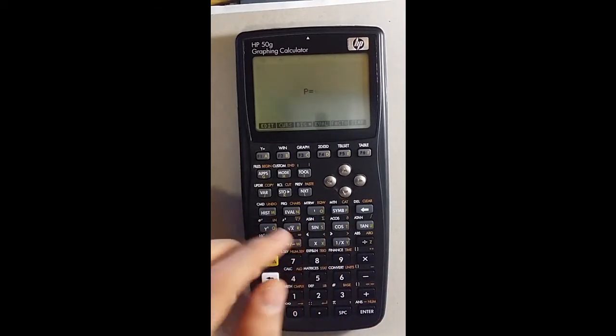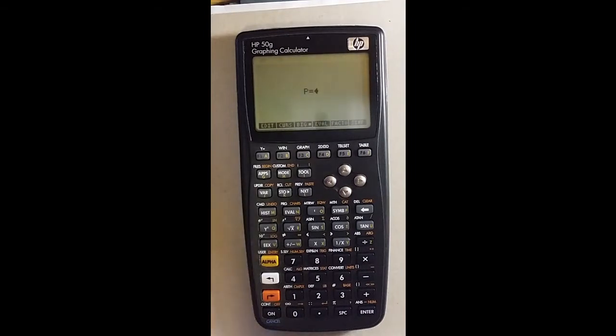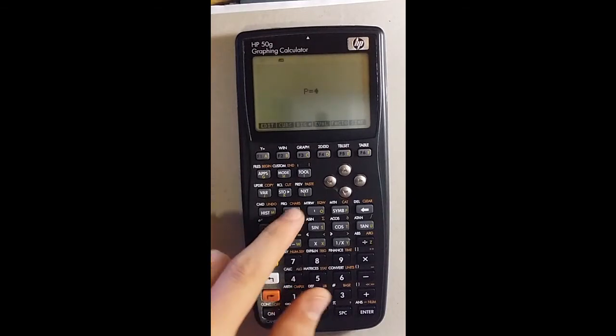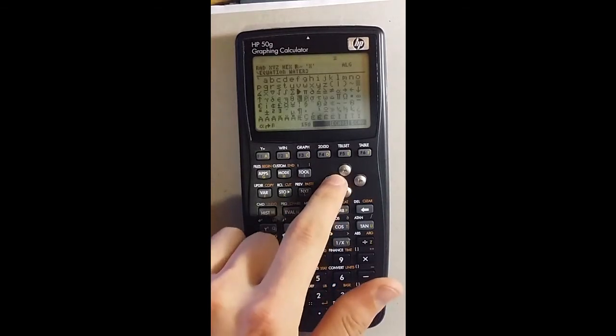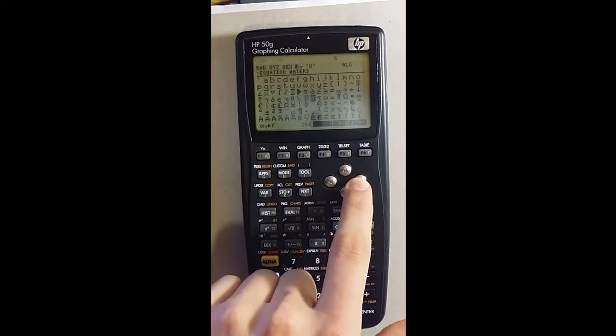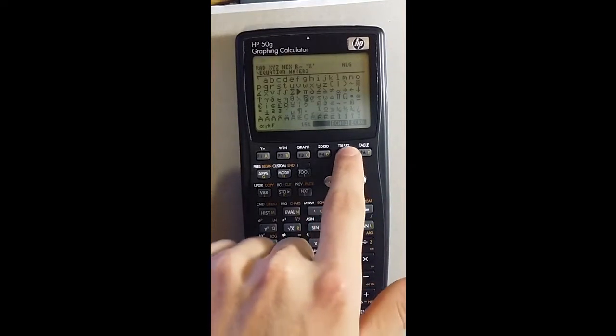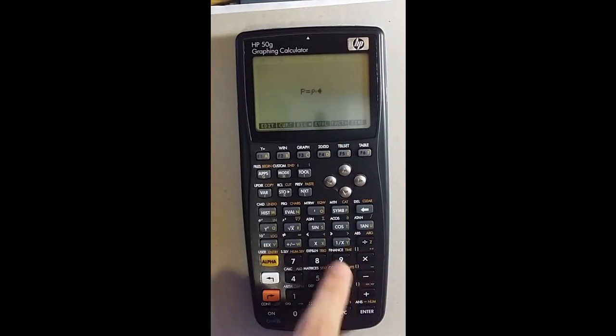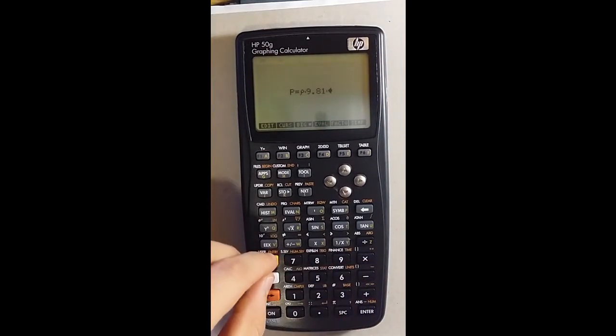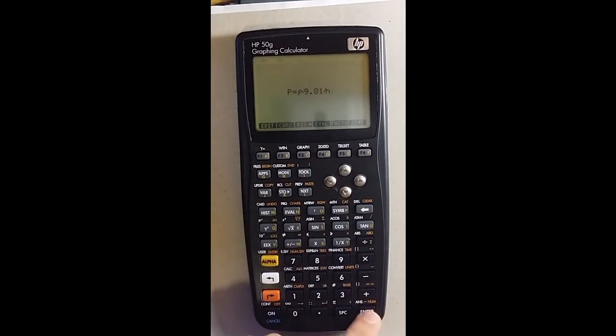Now you want to use the rho symbol. The HP calculator comes with a pre-installed list of characters that you can use. So you just press the right arrow and say CHARS, and you see there's a whole list of symbols you can use. I want to use the rho symbol times G, which is 9.81, times H.